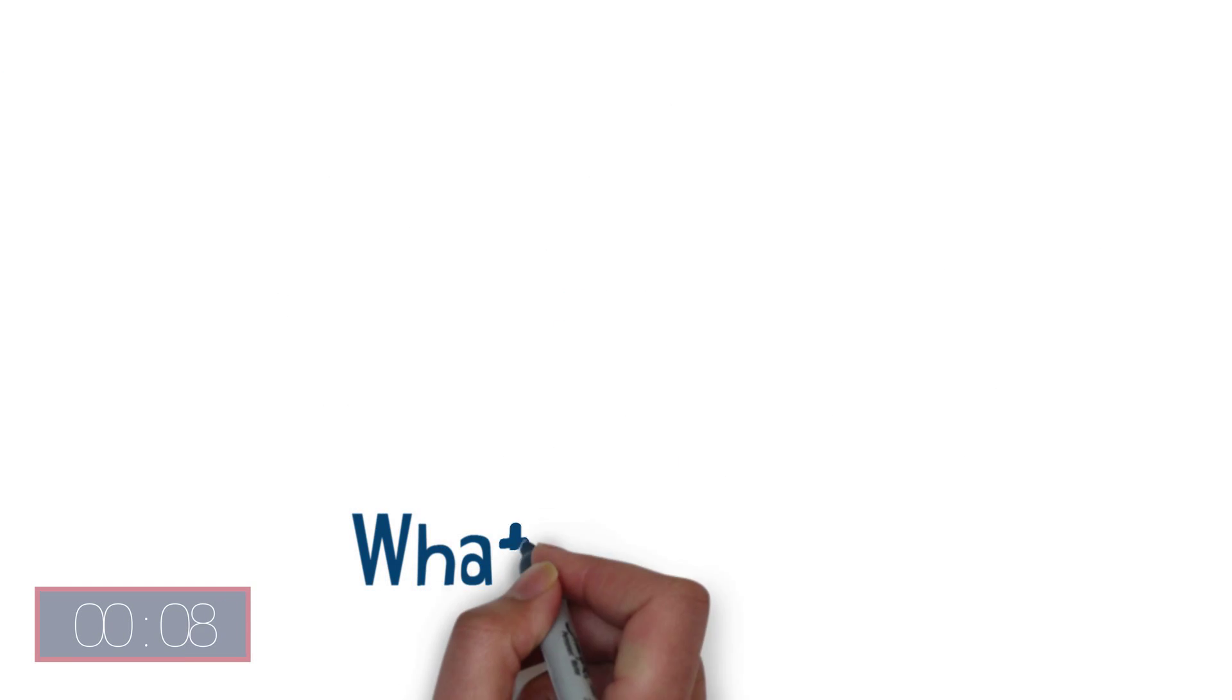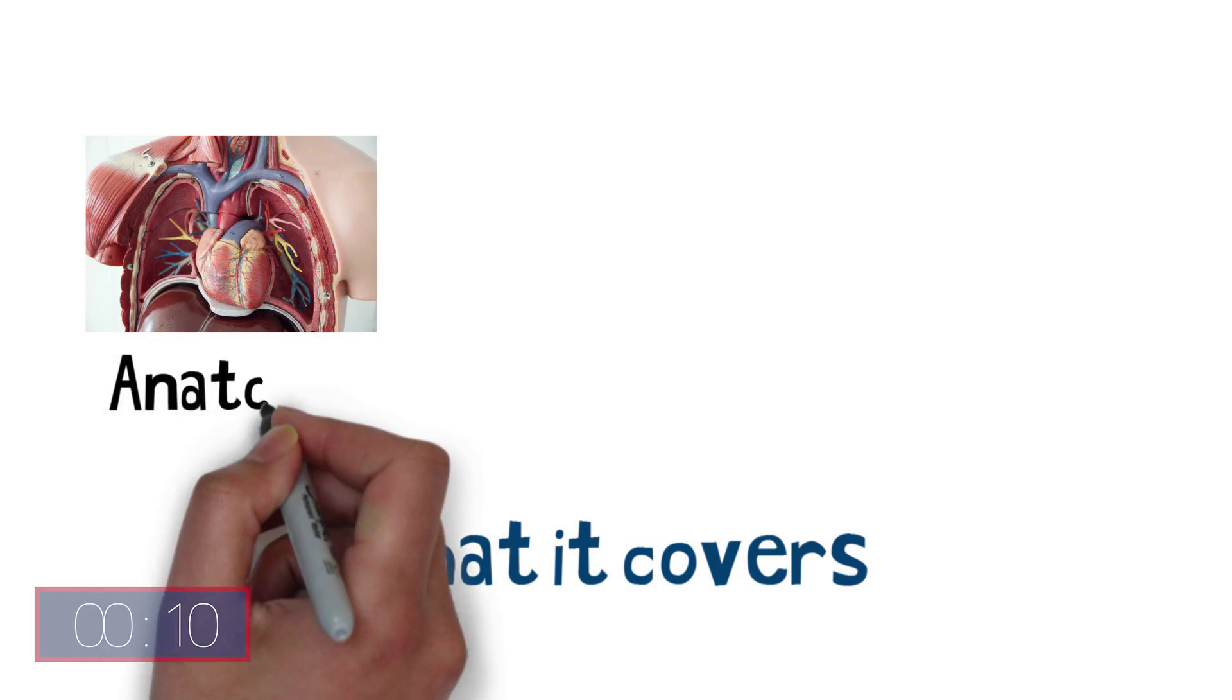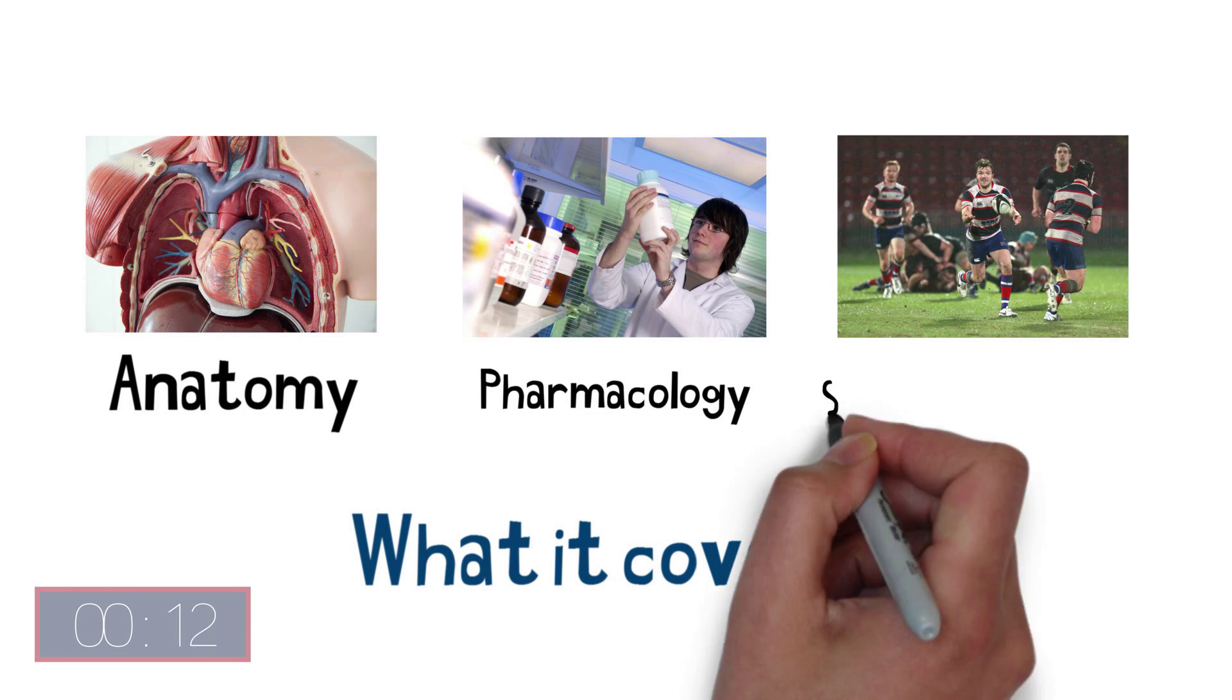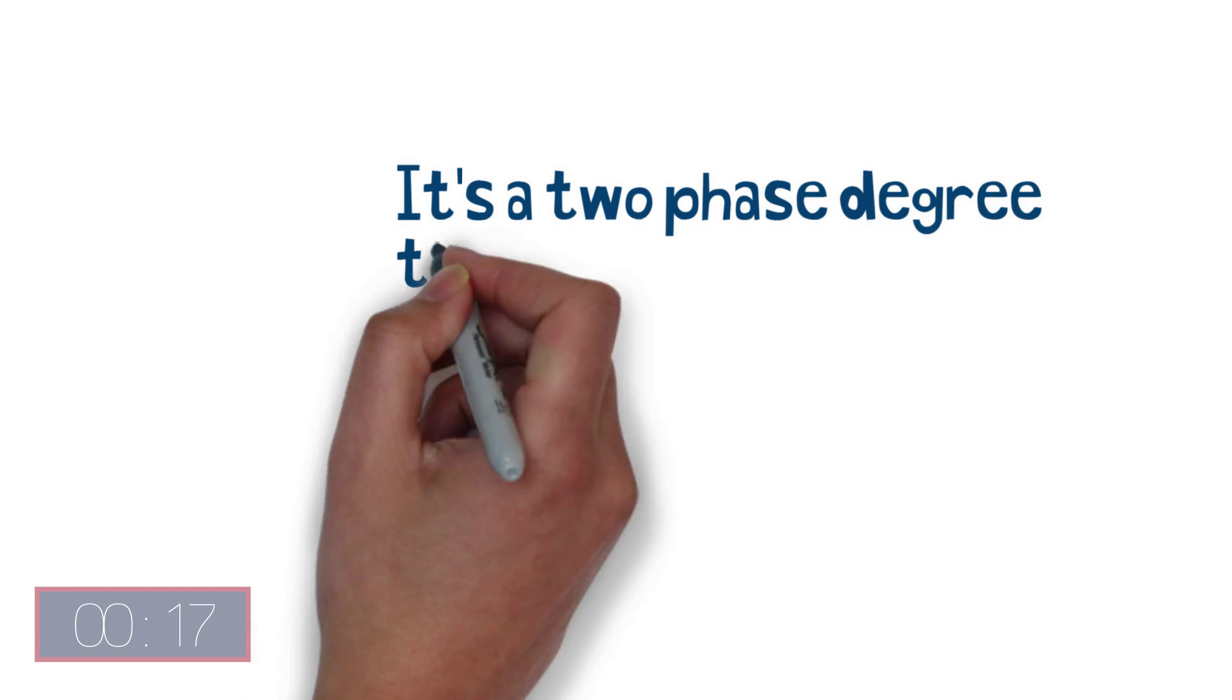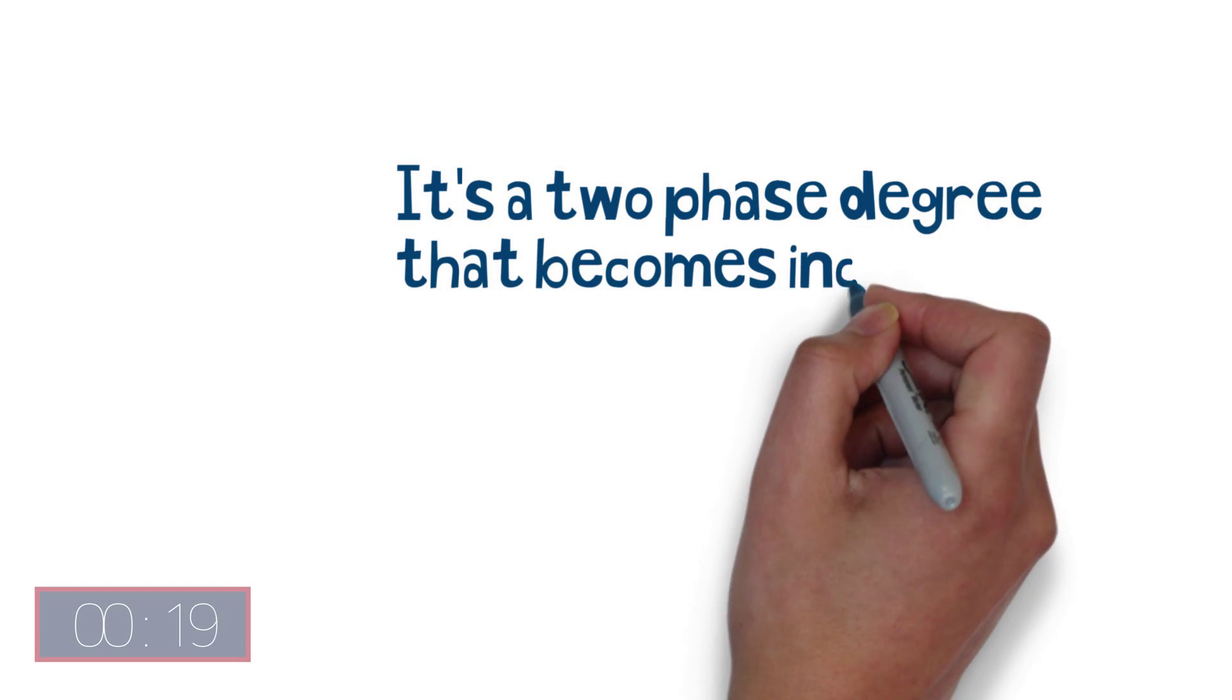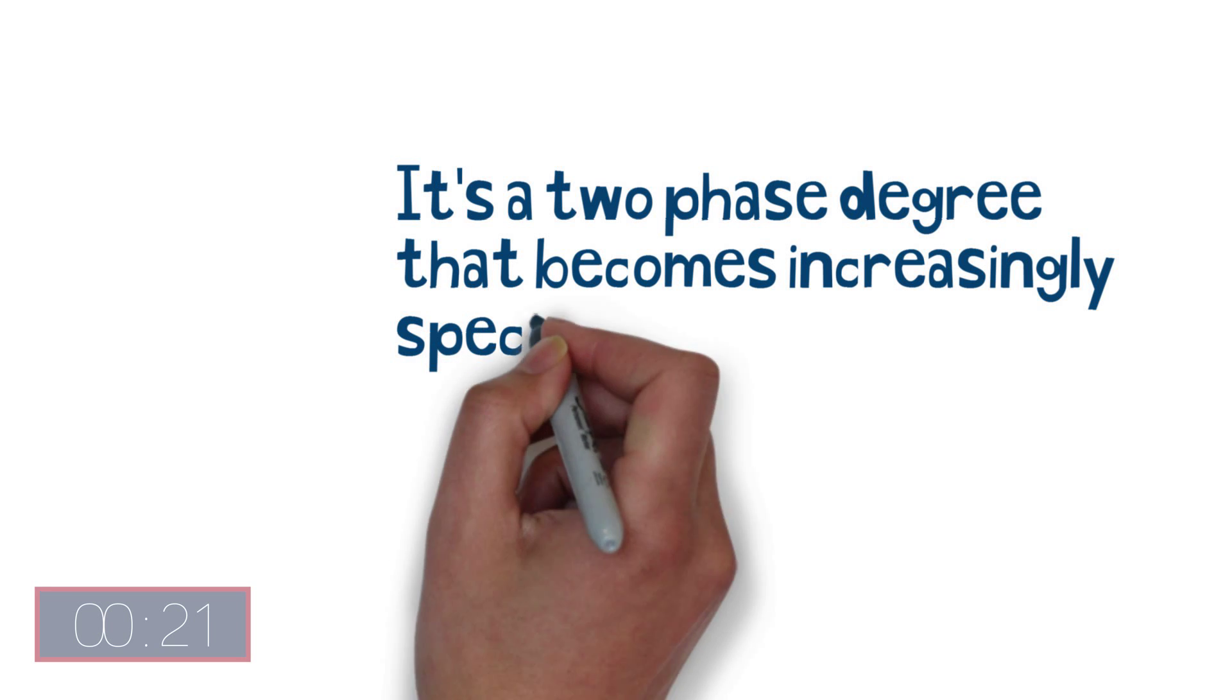You will cover subjects including anatomy, pharmacology and sports psychology. The degree is divided into two phases, becoming increasingly specialised as you progress from Phase 1 to Phase 2, with the ability to choose optional modules suited to your interests and career aspirations.